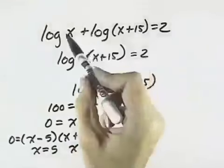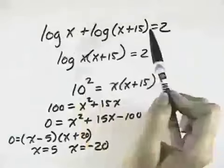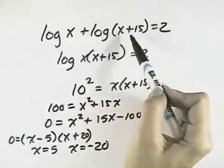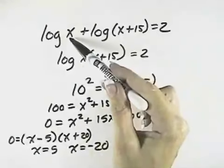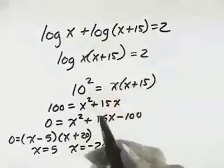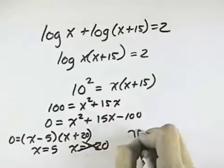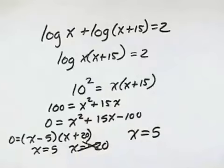Now I need to check my solutions in the original equation. When I substitute the 5 in, that's taking the log of a positive number. 5 plus 15 is 20, so that's the log of a positive number also, which are both valid. But when I substitute negative 20 in, it means I'm taking the log of a negative number. I can't take the log of a negative number, so even though I've done everything correctly, this is actually an undefined point. So the only solution is x equals 5, because I can never take the log of a negative quantity.